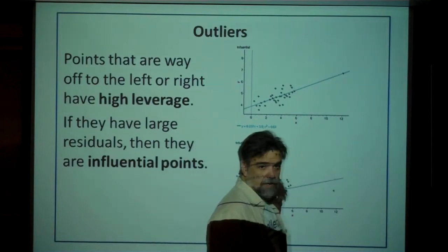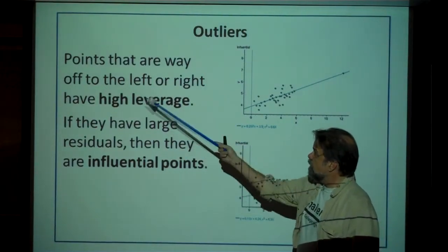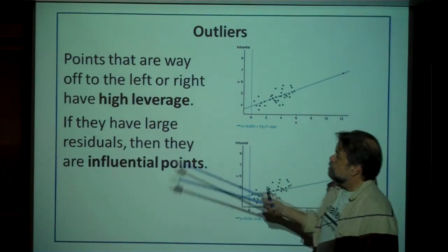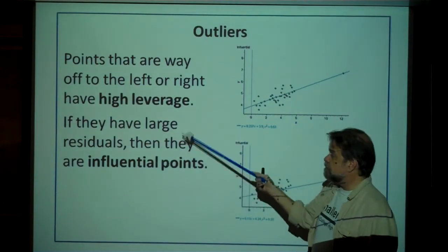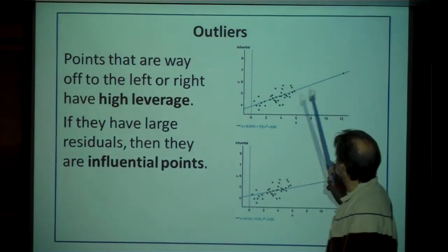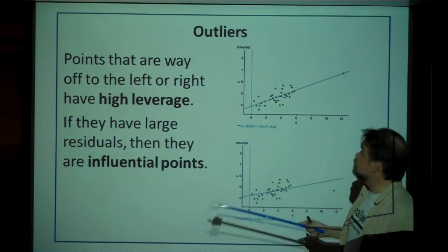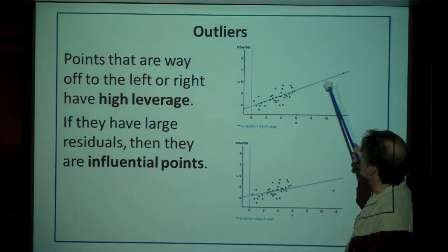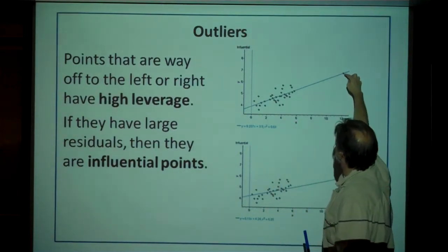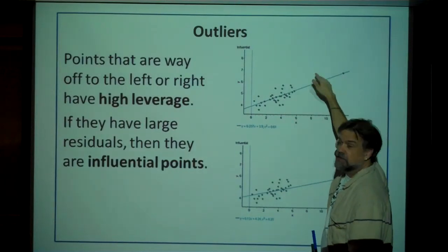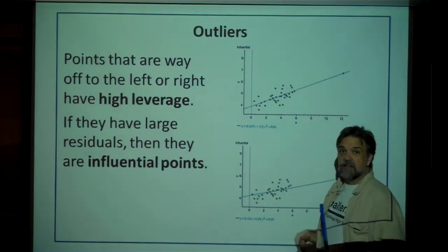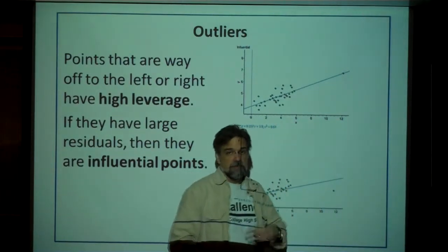To summarize these unusual points: points that are way off to the left or right — outliers for your explanatory data — are known as high leverage points. If they also have large residuals and are off the line, they're known as influential points. A point that is on the line but way out from everything else is a high leverage point — if you wiggle it, your line would move like crazy.